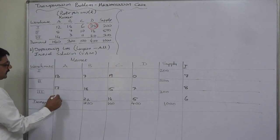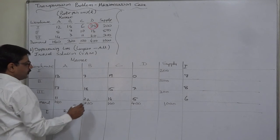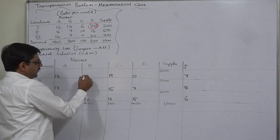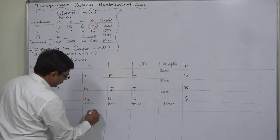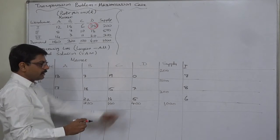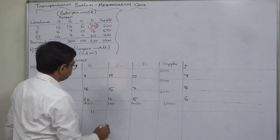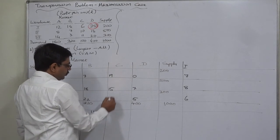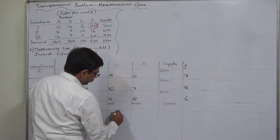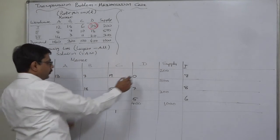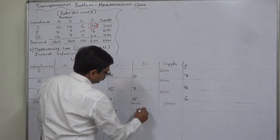For column A, the least cost is 11 and the immediate higher is 13, so 13 minus 11: penalty is 2. For column B, the least cost is 8 and the immediate higher is 18, so 18 minus 8: penalty is 11. For column C, the least cost is 14 and the immediate higher is 15, so 15 minus 14: penalty is 1. For column D, the least cost is 0 and the immediate higher is 5, so 5 minus 0: penalty is 5. See, all the penalties are always positive — never zero, never negative.